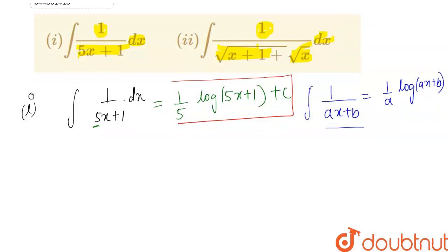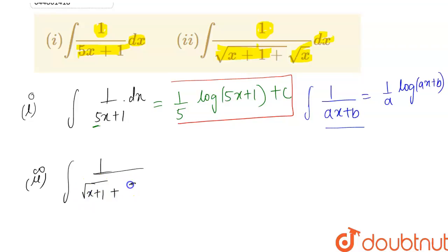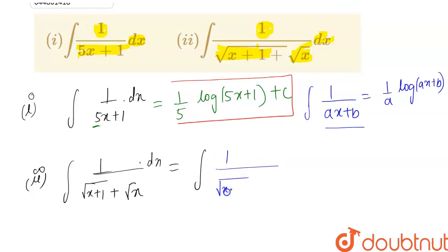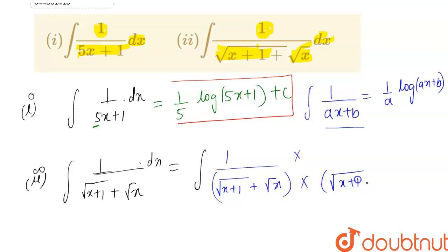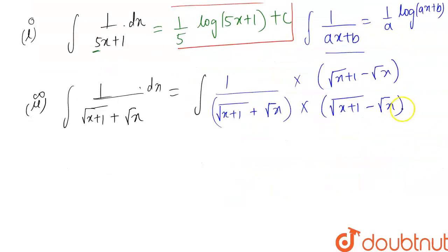Now let's move to the second part. The second part is the integration of 1 divided by (√(x+1) + √x) dx. To solve this, we rationalize the function by multiplying and dividing by (√(x+1) − √x).